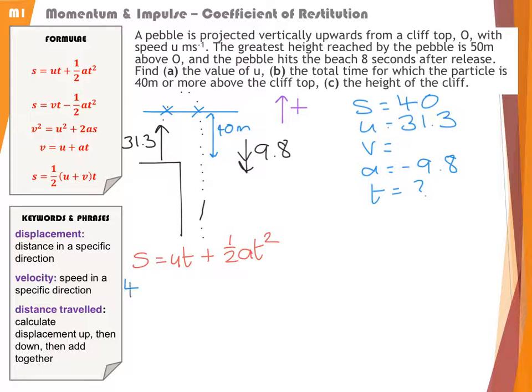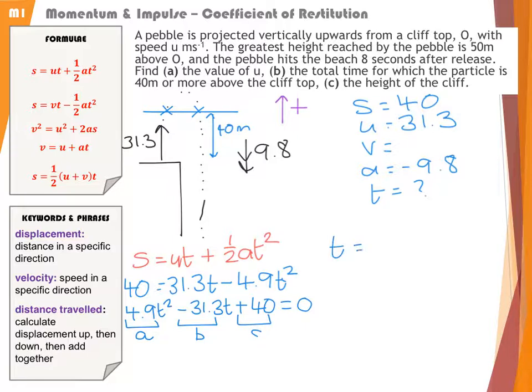S = UT + ½AT². Substituting: 40 = 31.3T + ½ × (-9.8)T², giving 40 = 31.3T - 4.9T². This is a quadratic equation. Rearranging: 4.9T² - 31.3T + 40 = 0. With A = 4.9, B = -31.3, and C = 40, using the quadratic formula gives T = 4.62 or 1.77.